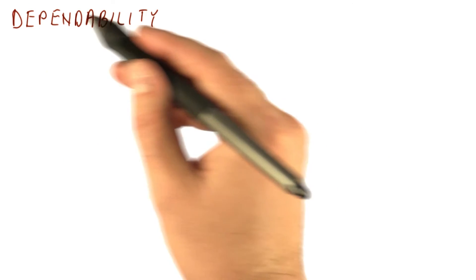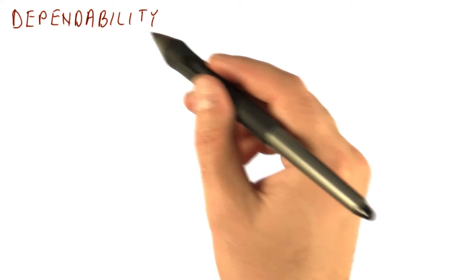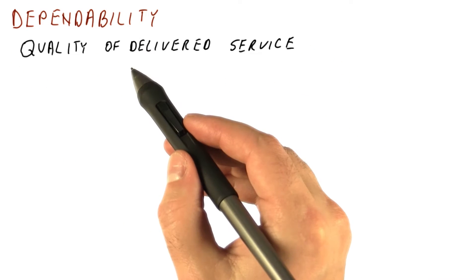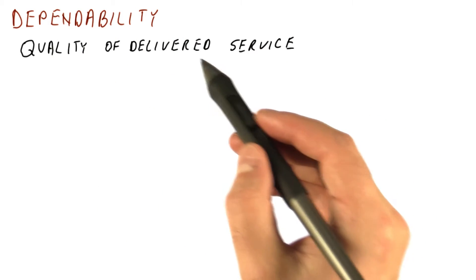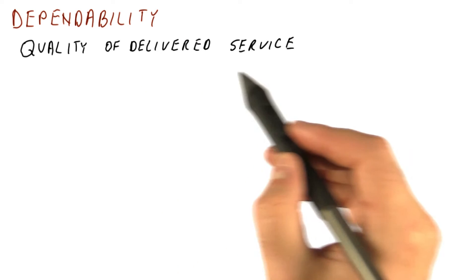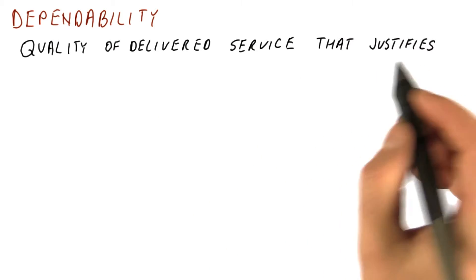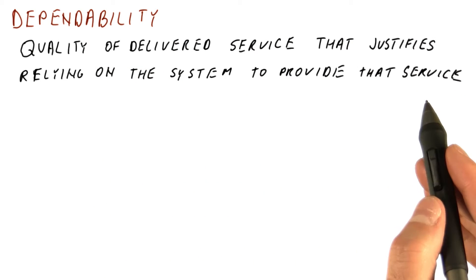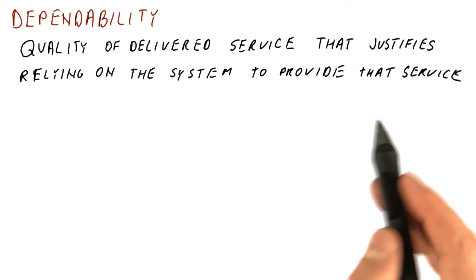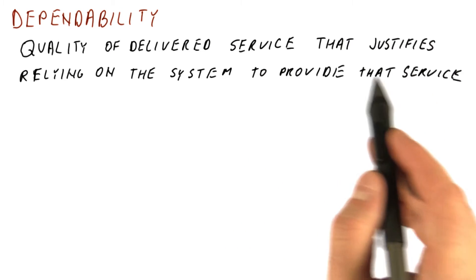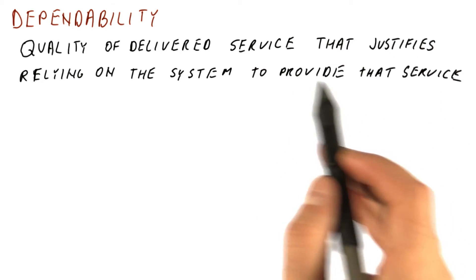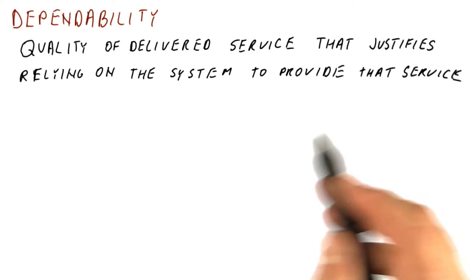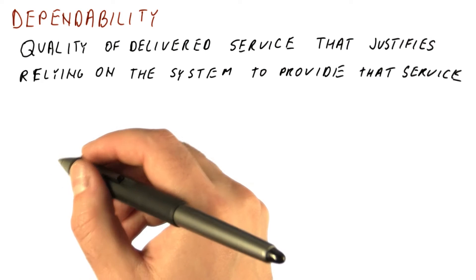The first concept we will learn in fault tolerance is dependability. Dependability is a quality of delivered service, meaning a characteristic of delivered service that justifies relying on the system to provide that service. A dependable system is one that provides the service in a way that makes us expect it to provide it correctly and in a dependable way.